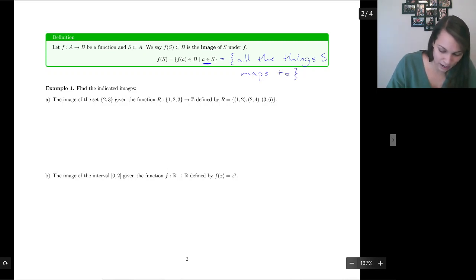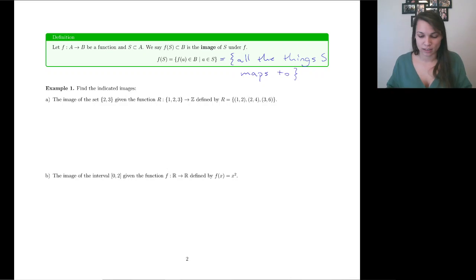You've got something in S, and we want to know what it maps to. So that's what an image is. It's all the things that are going to get mapped to. So let's do a couple of examples.